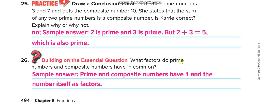What factors do prime numbers and composite numbers have in common? Both prime and composite numbers have one and the number itself as factors. So whether a number is prime or composite, it must have one and itself as factors.